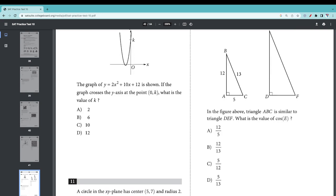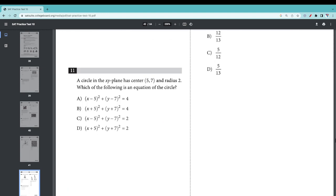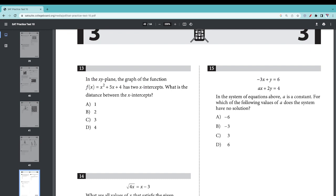Number 12: In the figure above, triangle ABC is similar to triangle DEF. What is the value of cosine of E? We have two similar triangles. Isn't angle E similar to angle B? What is the value of cosine of B? Cosine is adjacent over hypotenuse. The adjacent is 12 and the hypotenuse is 13, so 12 over 13. The answer is B.